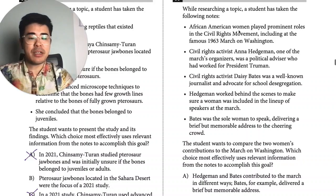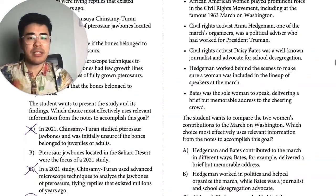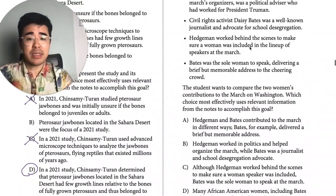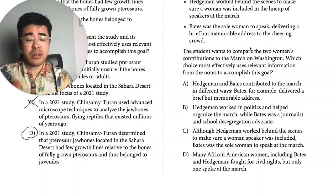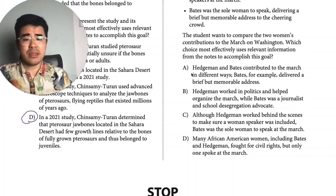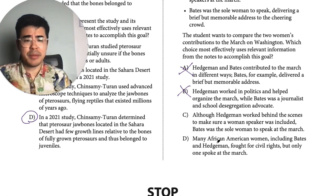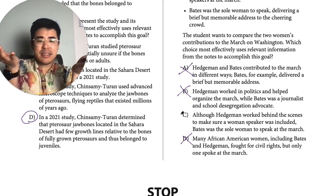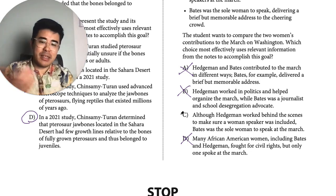Same type of question — African-American women played a prominent role in civil rights. We have a specific activist, another civil rights activist, Hedgeman, and Bates. They want to compare the two contributions. A doesn't compare the two — it just mentions one of them. B is kind of general and they want contributions to the March on Washington specifically. D is purposefully vague — 'one spoke at the march,' which one? C says they're equal in size and structure: although one did this, the other did that. So the answer is C.